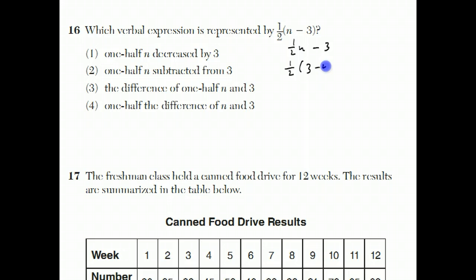because this one is actually 3 minus n. And even though the n is first and subtracted from 3 is there, it's actually 3 minus n. The difference of 1 half n in 3, I think, is also 1 half n minus 3. Whereas half the difference of n in 3 is 1 half the difference, half of, and the difference of n in 3 is n minus 3. So the answer's choice 4.